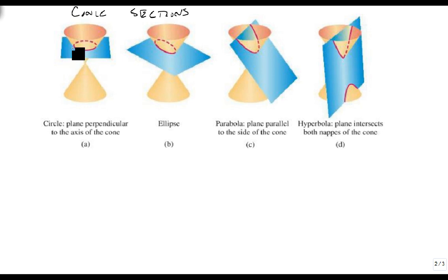Notice the circle, this one, has a plane that's perpendicular to the axis of the cone or parallel to the plane that we created, and it forms a perfect circle.